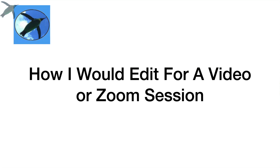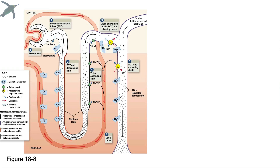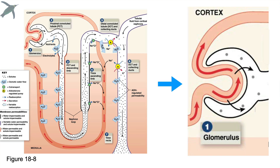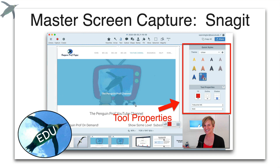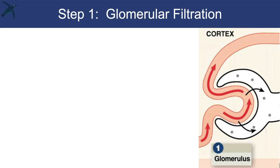Now how I would edit this for a video or Zoom session — I would take it several steps further. Start with that image: I want to really clean it up, not just enlarge it, but get rid of the stuff I'm not talking about right away. I use Snagit for that — it's by TechSmith, I'll leave links in the video below. It's fantastic.